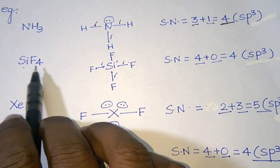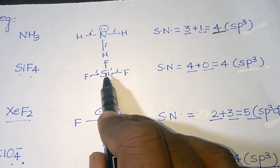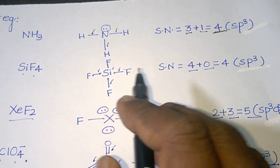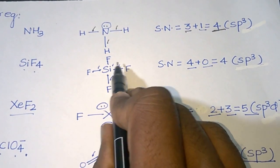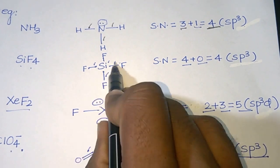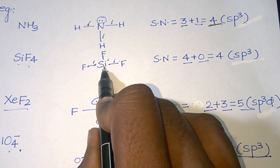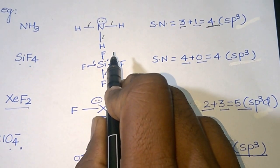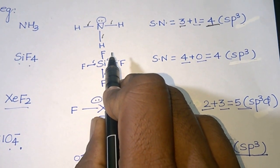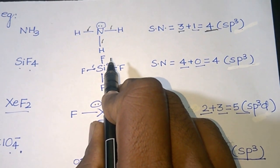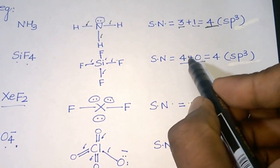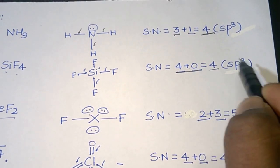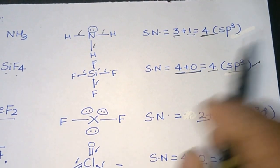In SiF4, silicon is bonded with 4 fluorine atoms. There are 4 sigma bonds and no lone pair on silicon because all 4 valence electrons of silicon are used in bonding. The steric number is 4 plus 0 equal to 4, and the hybridization is sp3.